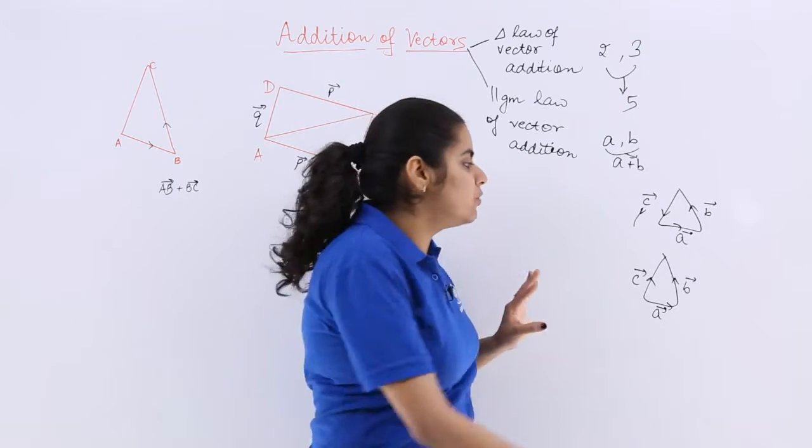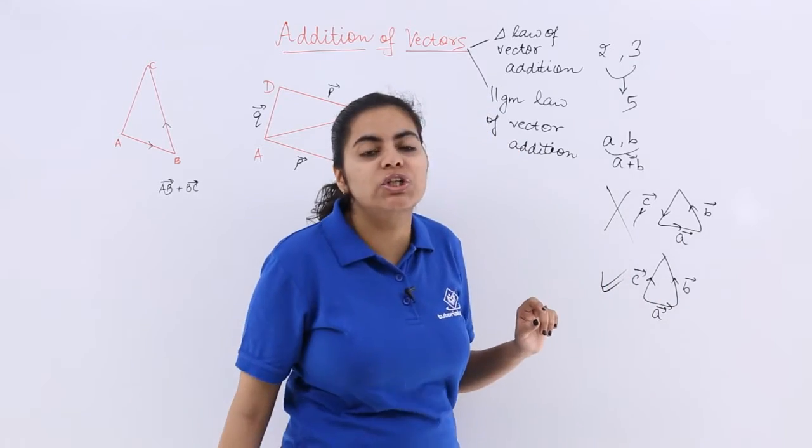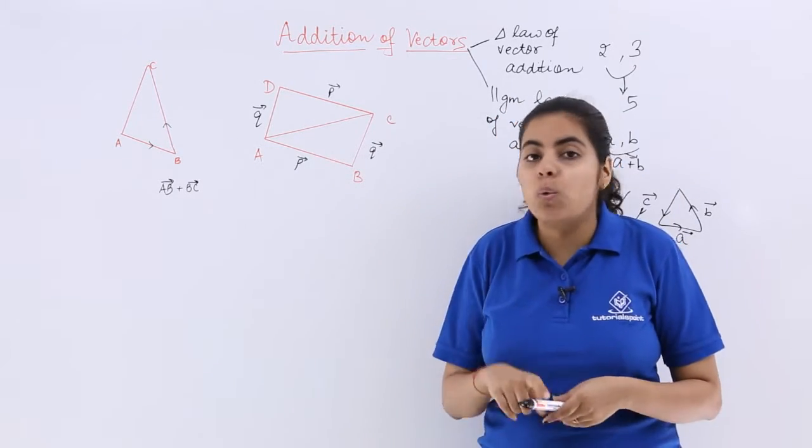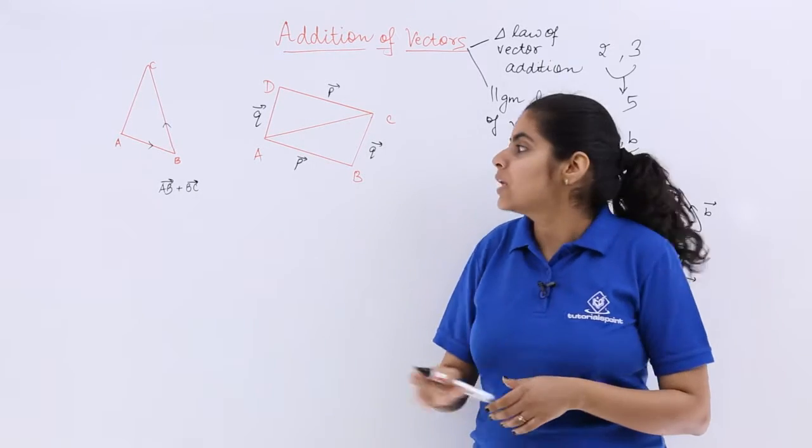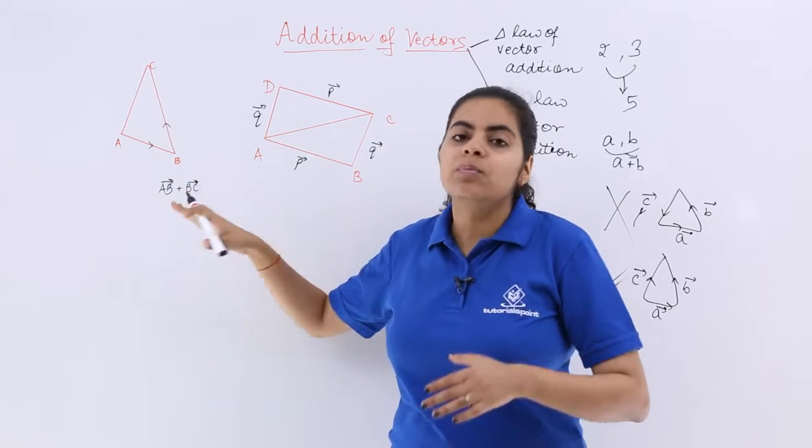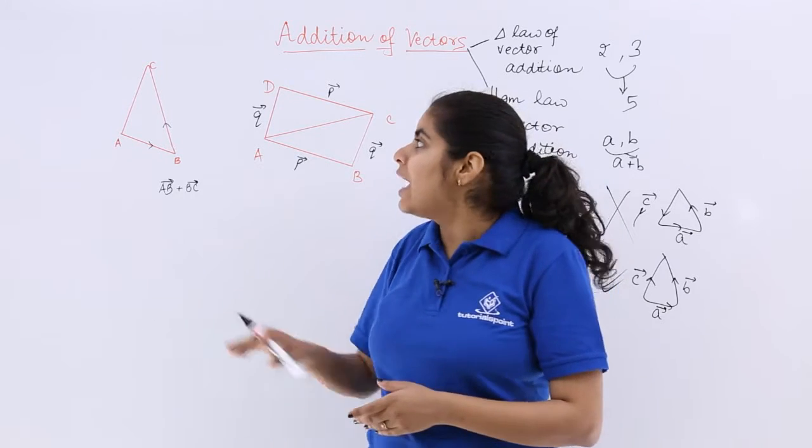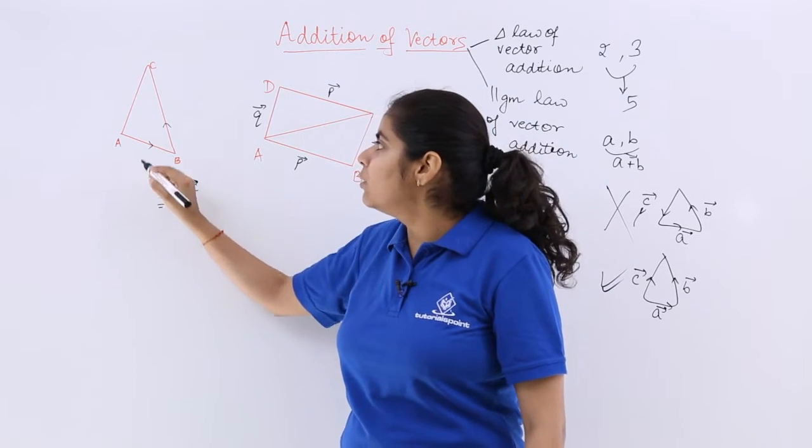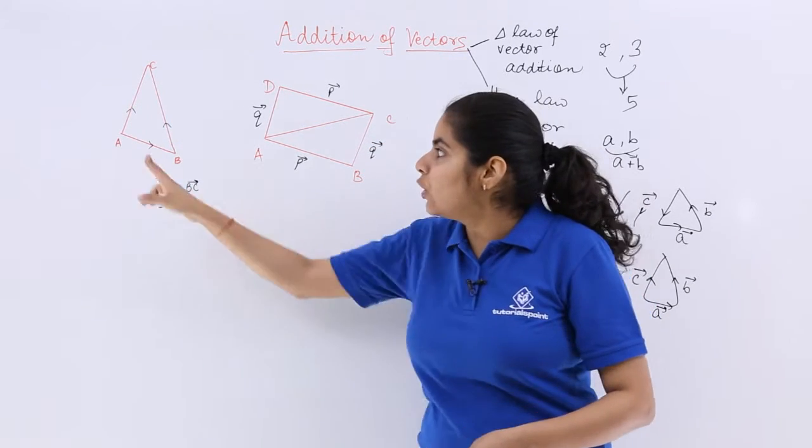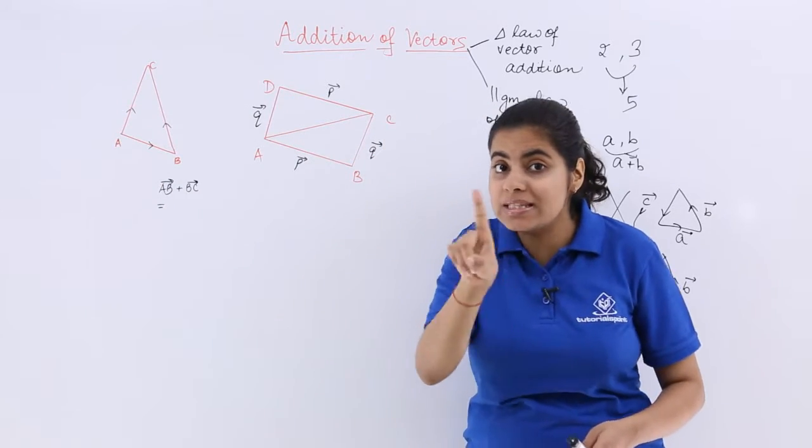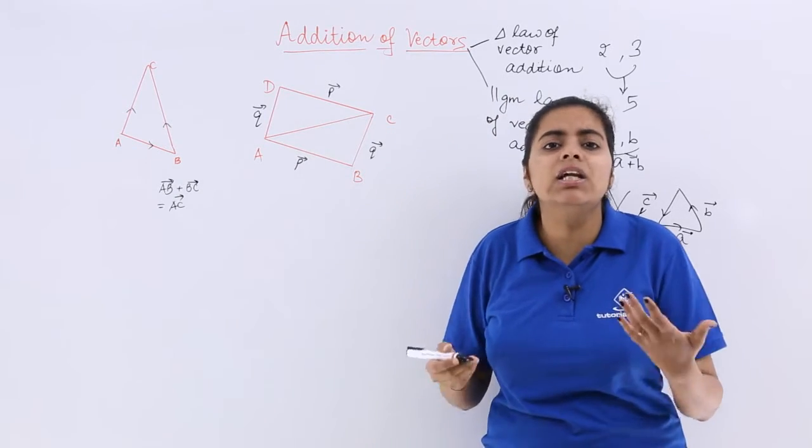And in triangle law of vector addition, we do not have to take the same order case, but we have to take the opposite order for the resultant vector. What is the terminology of the final vector? That is resultant vector. So AB vector plus BC vector will give me finally a vector which is called a resultant vector. It will be AC vector. It will not be following the same order, it will not be CA vector, but it will be AC vector. This is triangle law of vector addition.